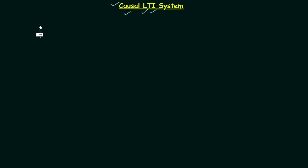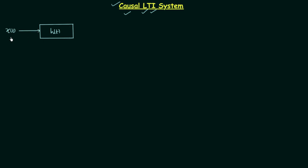Let's try to find out the necessary and sufficient condition to prove the given LTI system is causal in nature. Let's consider an LTI system having the impulse response h, where we are interested in finding the output for a particular input x(t). The output y(t) can be calculated by the convolution operation: y(t) equals the integration from minus infinity to infinity of h(τ) multiplied by x(t minus τ) dτ.